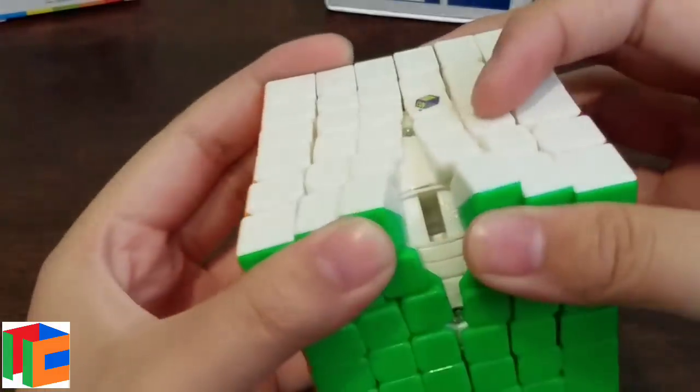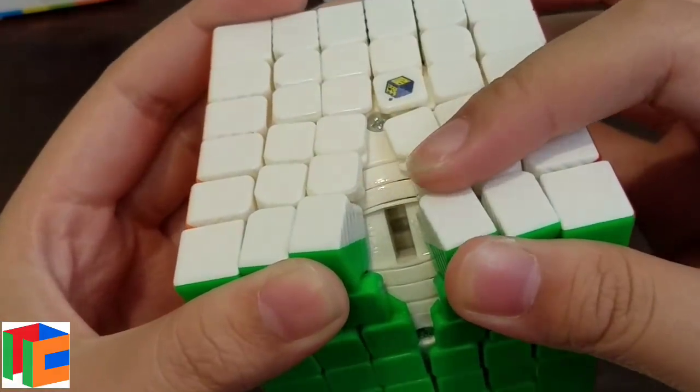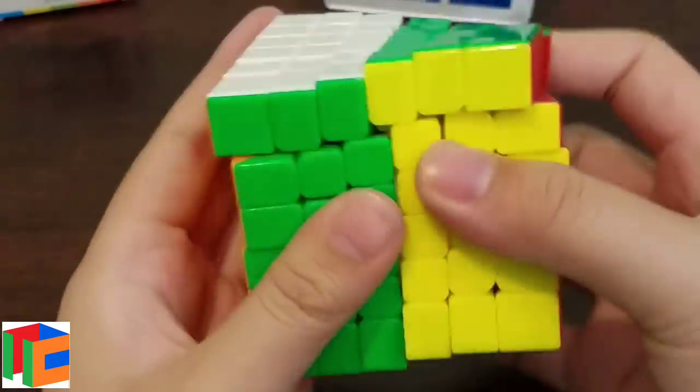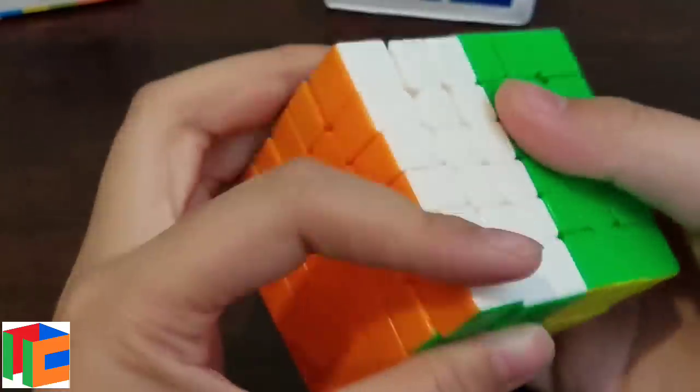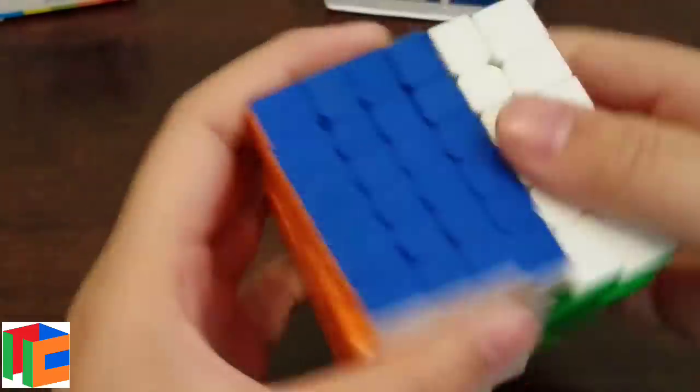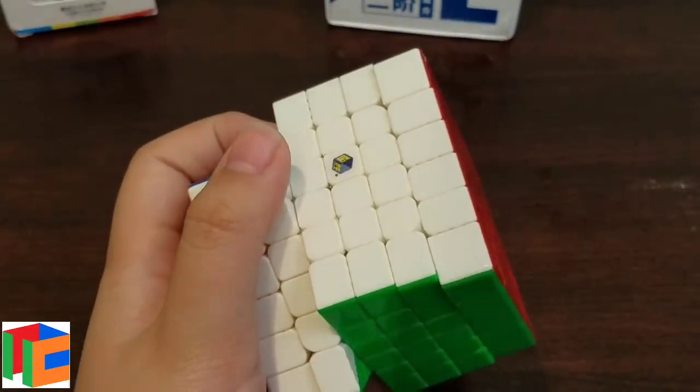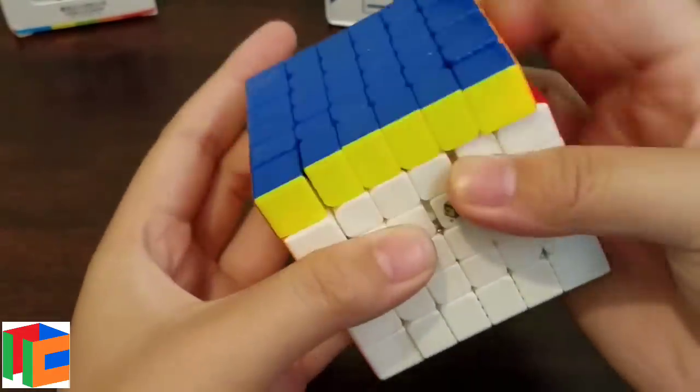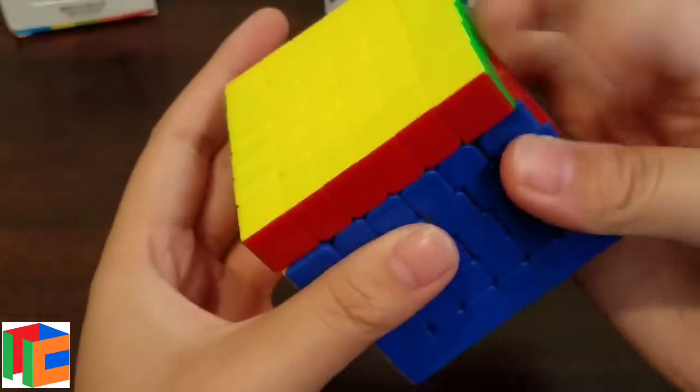First up, I'm noticing that it's extremely loose and it seems to come with factory lube. It actually feels similar to, let me zoom out a bit, it feels similar to the Yushin Little Magic 3x3 and the 2x2.